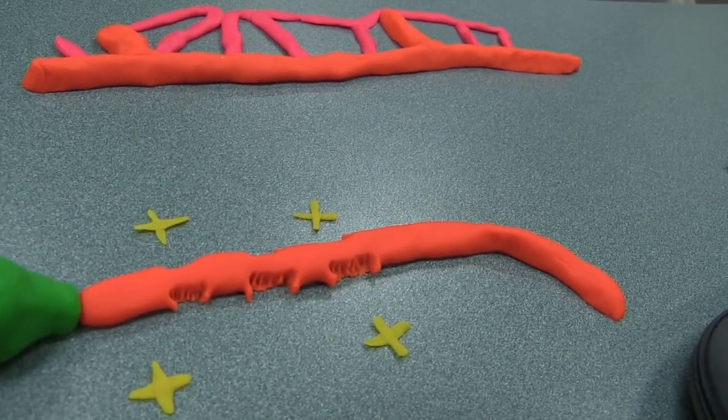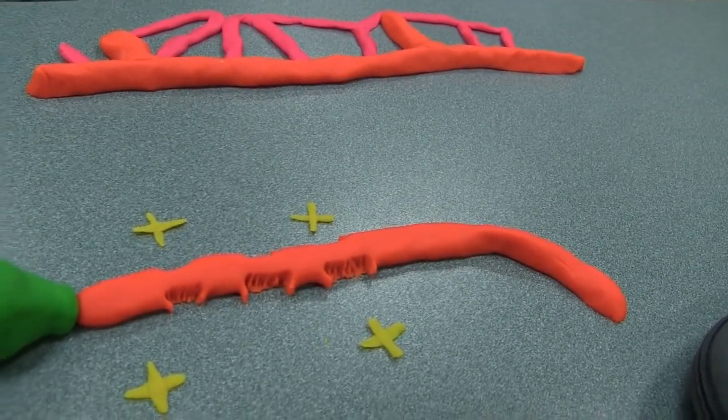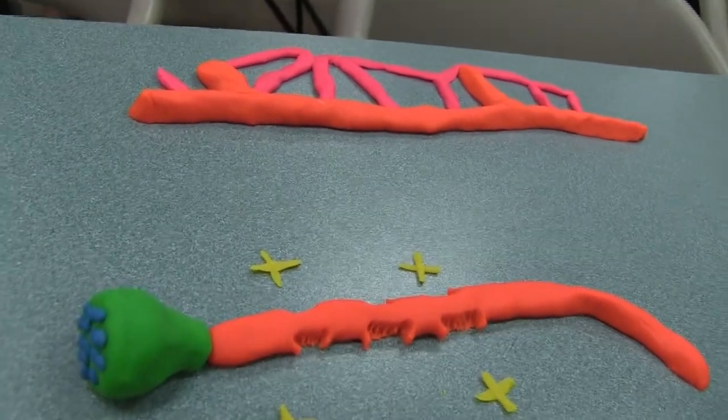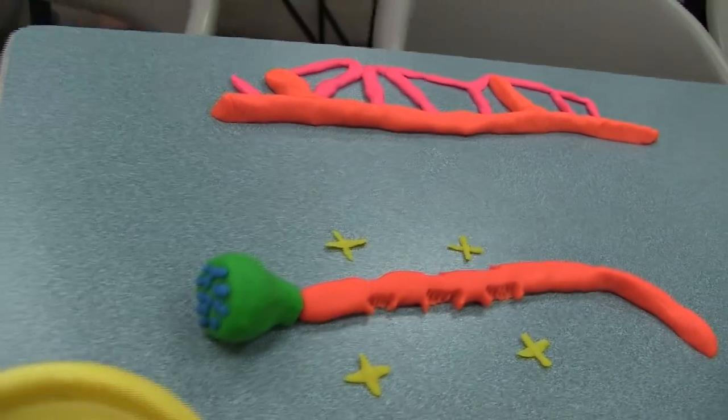Okay, so you didn't include the dendrites or the cell body part. Okay, alright, just making sure what we've got here. Alright, so our synapses, our blue things are our synaptic vesicles. And then what happens?